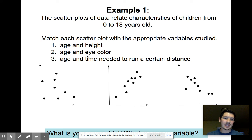We have three categories: age and height, age and eye color, and age and time needed to run a certain distance. So let's kind of look at this first one. Do we have a connection to it? Is there a connection between any of these?